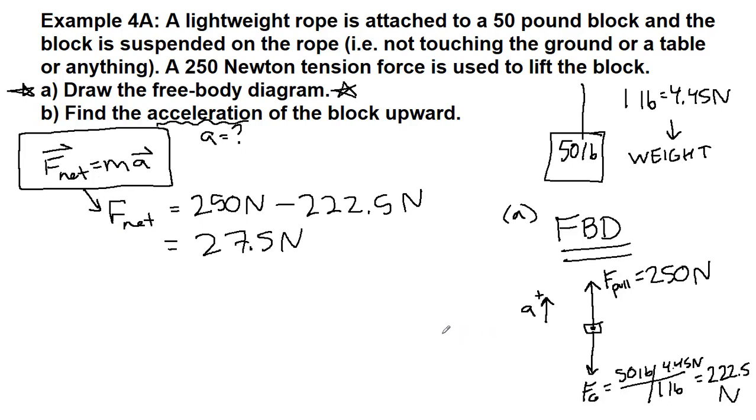The problem is we still don't have the mass. The force of gravity is equal to mass times the acceleration of gravity. So we have 222.5 is equal to the unknown mass that we're about to need times the acceleration of gravity, 9.8. So if we divide both sides by 9.8, then we will get that the mass is equal to 22.7 kilograms.